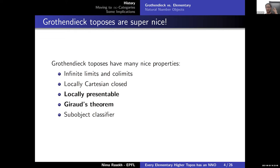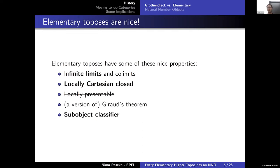Grothendieck toposes are very nice: they are locally cartesian closed, in particular locally presentable, and they have subobject classifiers, so we can use them to do lots of math. Unfortunately, elementary toposes are not as nice — they are not locally presentable by default, we only have finite colimits, not infinite ones, and only some of the exactness axioms survive. The ones we bold are taken as the definition: a category with finite limits, locally cartesian closed, and a subobject classifier.